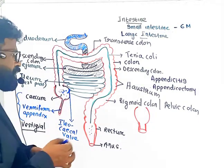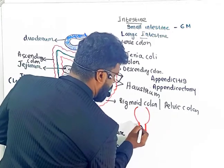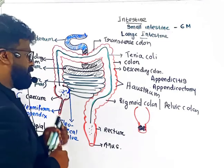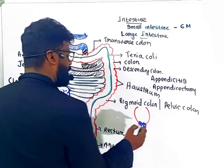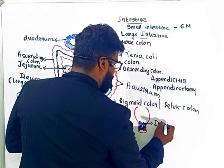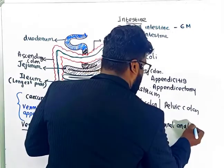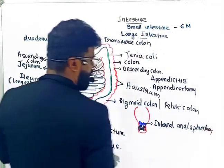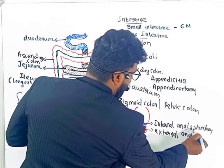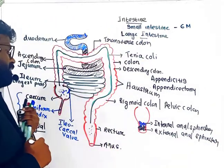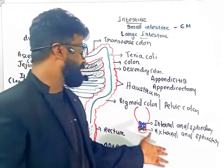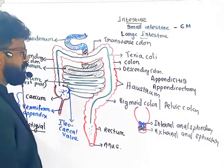The opening of the anus is guarded by two types of sphincters. The first is the involuntary internal anal sphincter, and the second is the voluntary external anal sphincter. The internal anal sphincter is an involuntary muscle, while the external anal sphincter is a voluntary muscle. These are the different regions of the large intestine.